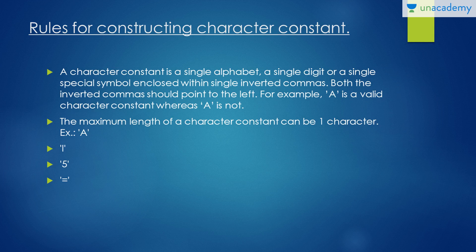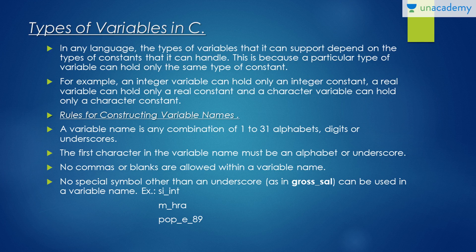Now let's see the rules for constructing character constants. A character constant is a single alphabet, a single digit, or a single special symbol enclosed within single inverted commas. Both inverted commas should point to the left; if one points left and the other right it will be an error according to the compiler. The maximum length of a character constant can be only one character.